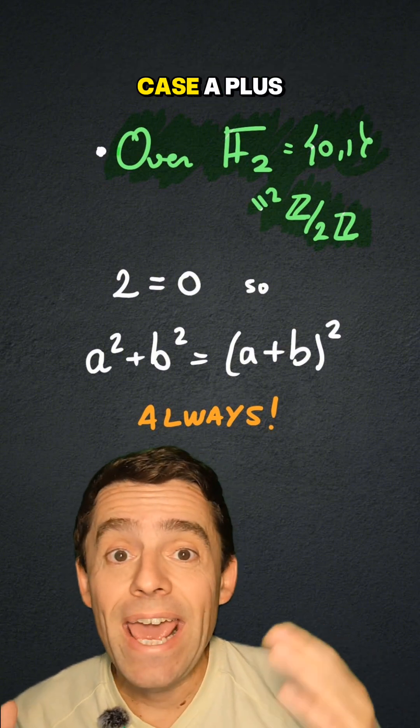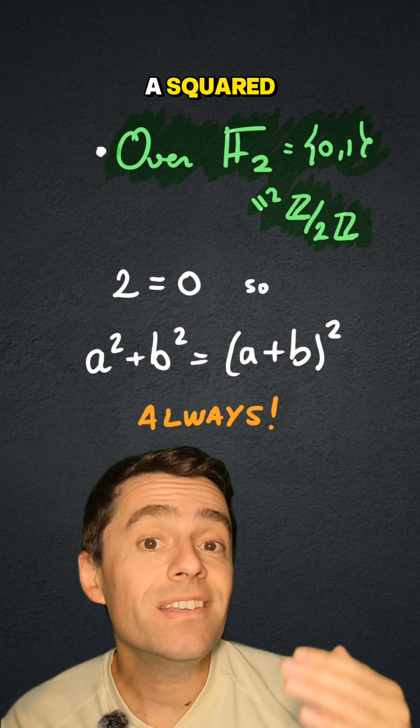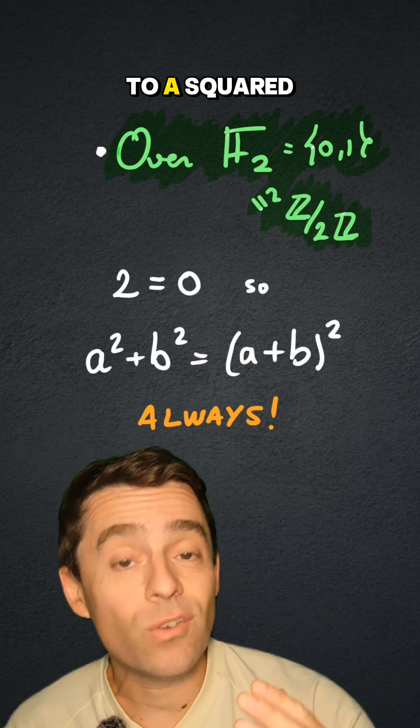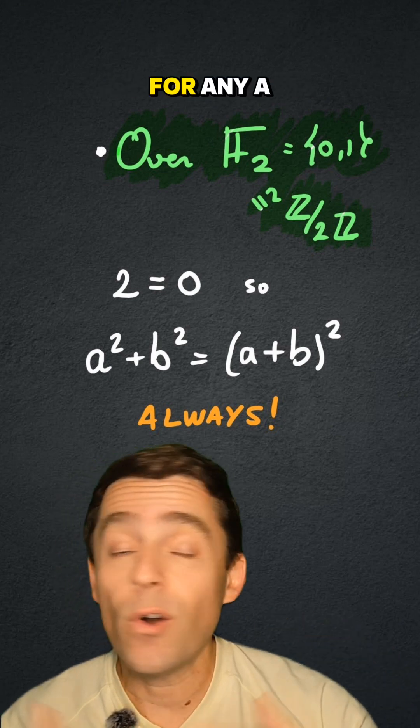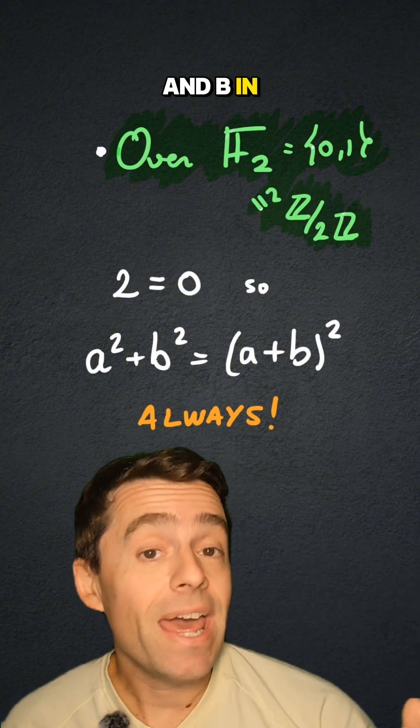And in that case, a plus b squared is always equal to a squared plus b squared for any a and b in F2.